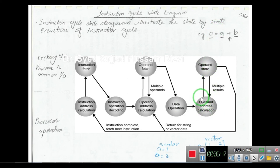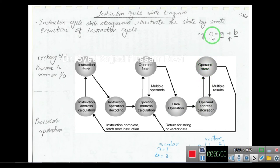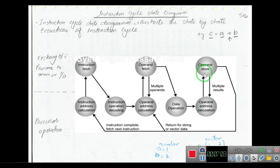The result accumulated from adding a and b is stored into c. Since we have only one destination operand, it is only one step from address calculation to operand store. Then the processor fetches the next instruction.